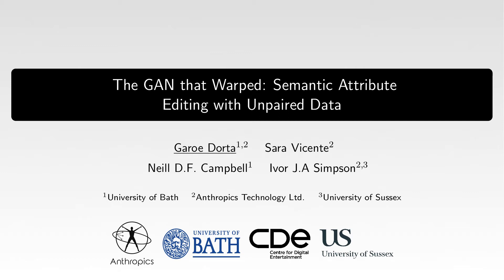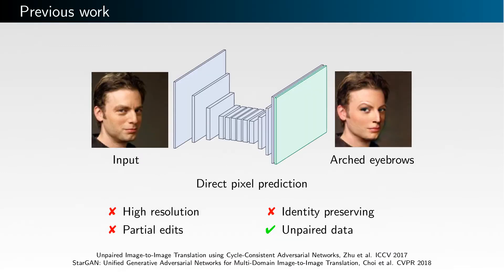We're pleased to present our work on semantic image editing. Deep neural networks have recently been used to edit images with great success, in particular for faces. However, they are often limited to operating at a restricted range of resolutions. Also, many methods are so flexible that the predicted edits can result in an unwanted loss of identity.